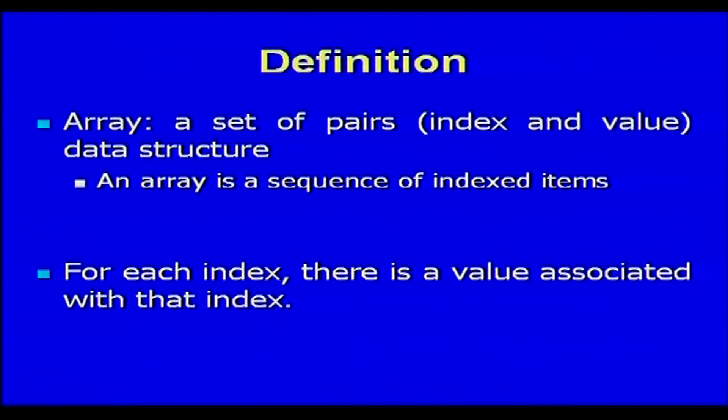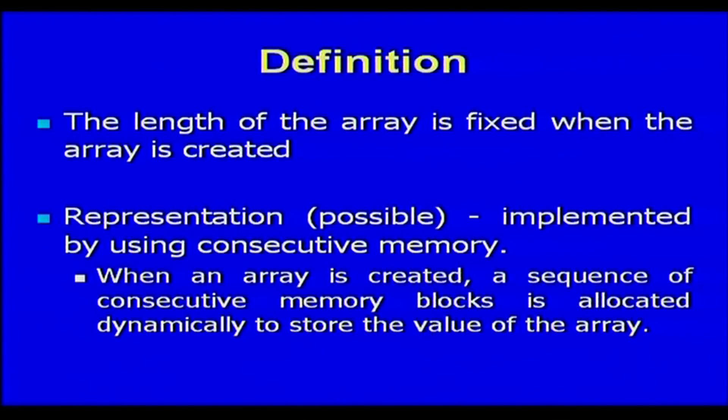Before we go into that, we have to know what an array is. An array is usually associated with a pair of values: an index and a value, and it is a sequence of indexed items. For example, when I say the first element, the index is 1 and the element is fixed as 5 or something like that. An important constraint of arrays is that the length of the array has to be fixed before the array is created, and it is implemented using consecutive memory.